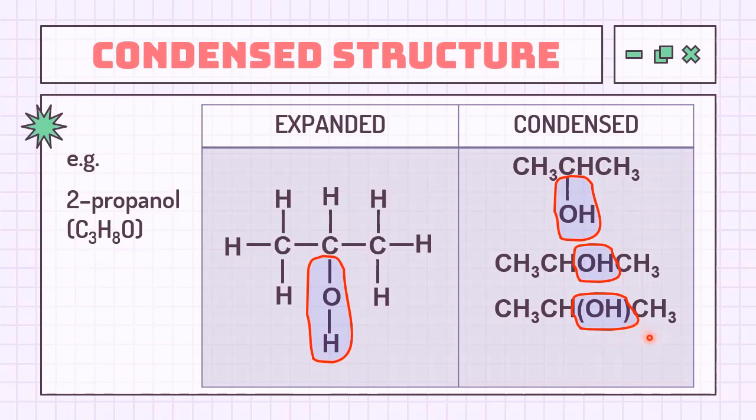And then the final representation is when you further condense the structure. So we have CH3 subscript 2 here by factorizing the same group that is attached to the same carbon. In the second carbon, we have CH3 and CH3, that's why we can condense them together.